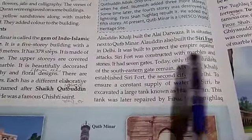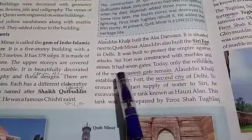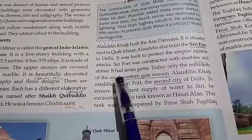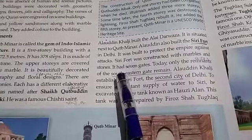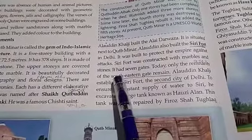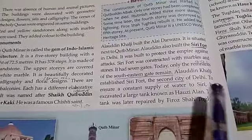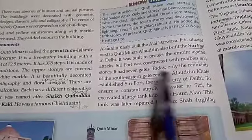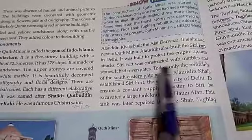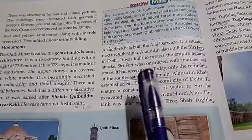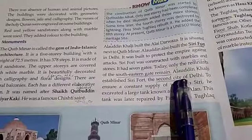The Siri Fort was built to protect the empire against the many Mongol attacks. It was constructed with marble and stones and had seven gates. Today, only the remnants of the south-eastern gate remain.